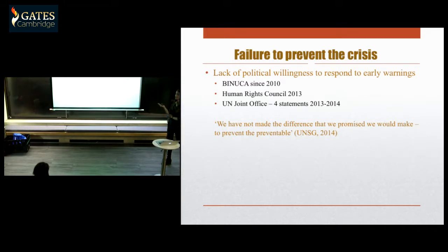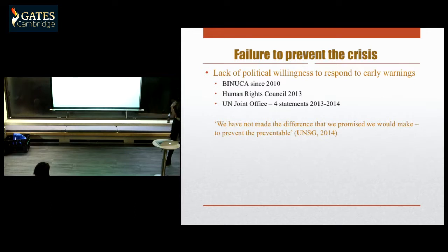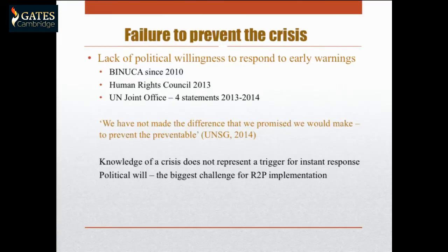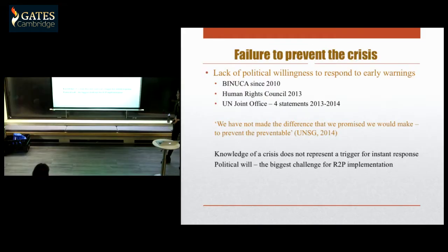The Human Rights Council issued numerous statements and reports before the crisis reached its peak, and the UN Joint Office on the Responsibility to Protect and the Prevention of Genocide issued alarming statements calling the UN Security Council to take adequate measures. In the words of the UN Secretary General, 'we have not made the difference that we promised we would make to prevent the preventable.' What we see is a story we hear again and again: knowledge of a crisis that cannot trigger a response. It's a matter of political will — the biggest challenge for R2P implementation.